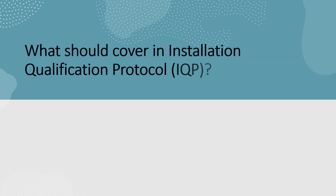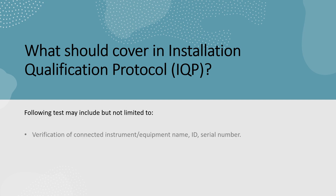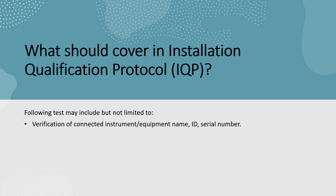So now in this slide, we will discuss what should be covered in the installation qualification protocol, that is called IQP. The following tests may include but are not limited to: first, verification of connected instrument or equipment name, ID, and serial number. For example, instrument name is HPLC or UV spectrophotometer. There will be some in-house procedures available to assign an identification number to the hardware, and the serial number which is mentioned on the hardware or manufacturer document.